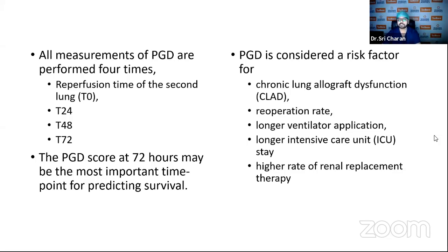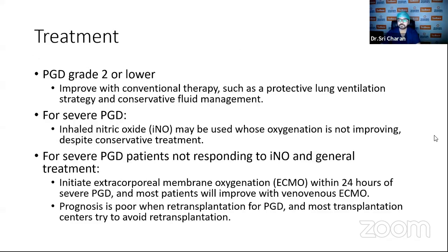PGD is a risk factor for chronic lung allograft dysfunction (CLAD), increased re-operation rate, longer ventilator use, longer ICU stay, and higher rate of renal replacement therapy. Treatment: PGD grade 2 or lower is managed with conventional therapy — protective lung ventilation with low tidal volumes and open lung strategy, and conservative fluid management. For severe PGD, inhaled nitric oxide may be used if oxygenation is not improving. If not responding even to inhaled nitric oxide, ECMO should be initiated within 24 hours — most patients improve with venovenous ECMO. If not improving on VV-ECMO, re-transplantation may be considered but prognosis is very poor, and most centers try to avoid re-transplantation for PGD.